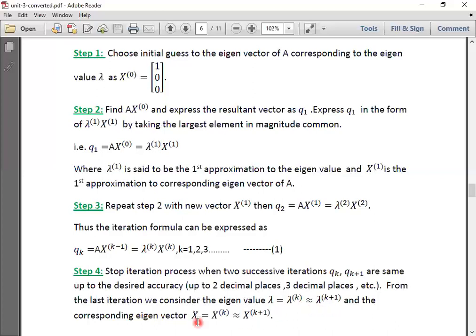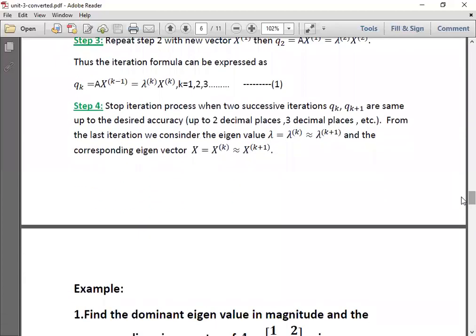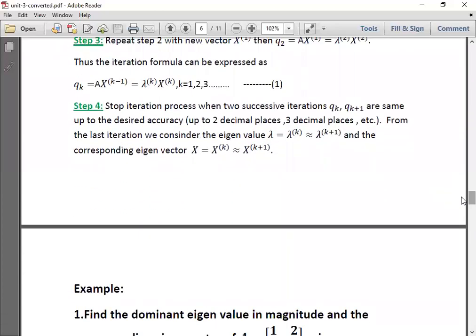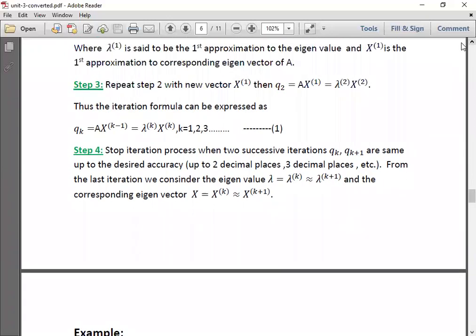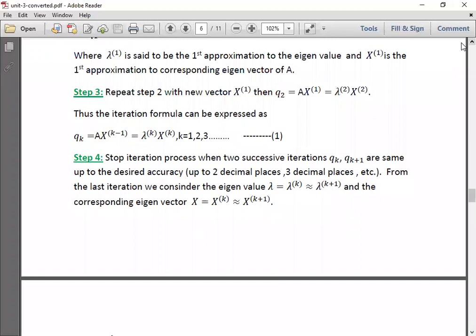And eigenvector is taken as X equals Xₖ which is very much close to Xₖ₊₁. Kth iteration of X is very much close to K plus 1 iteration of X. The latest iteration Xₖ₊₁ must be taken as X. This is the process to be done to each problem, to find only the largest eigenvalue in magnitude of a given matrix. Let us see an example in next lecture.